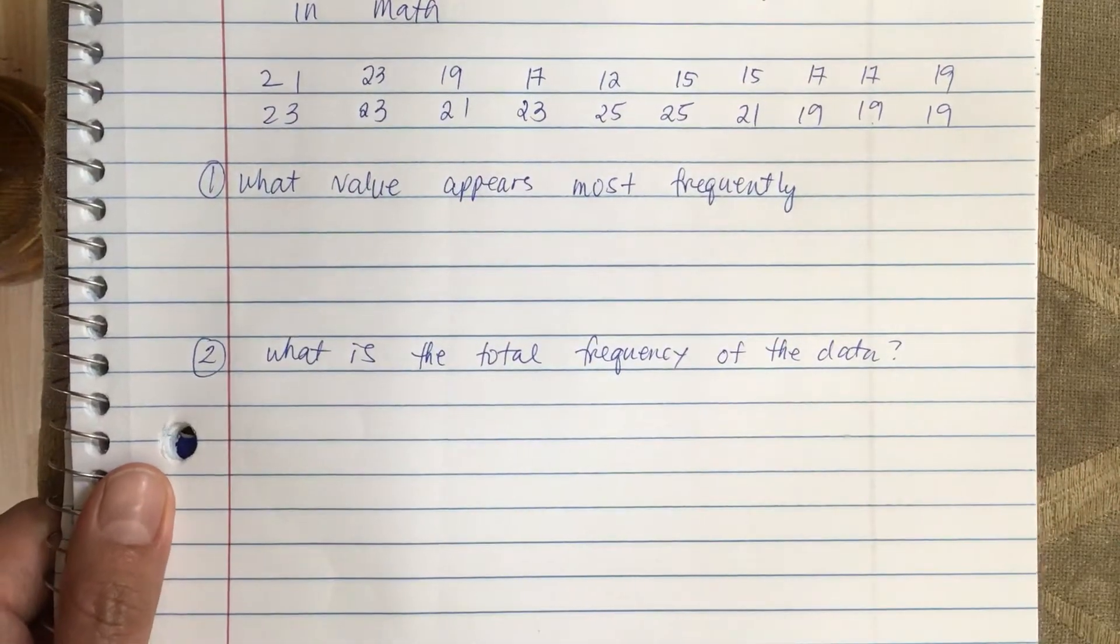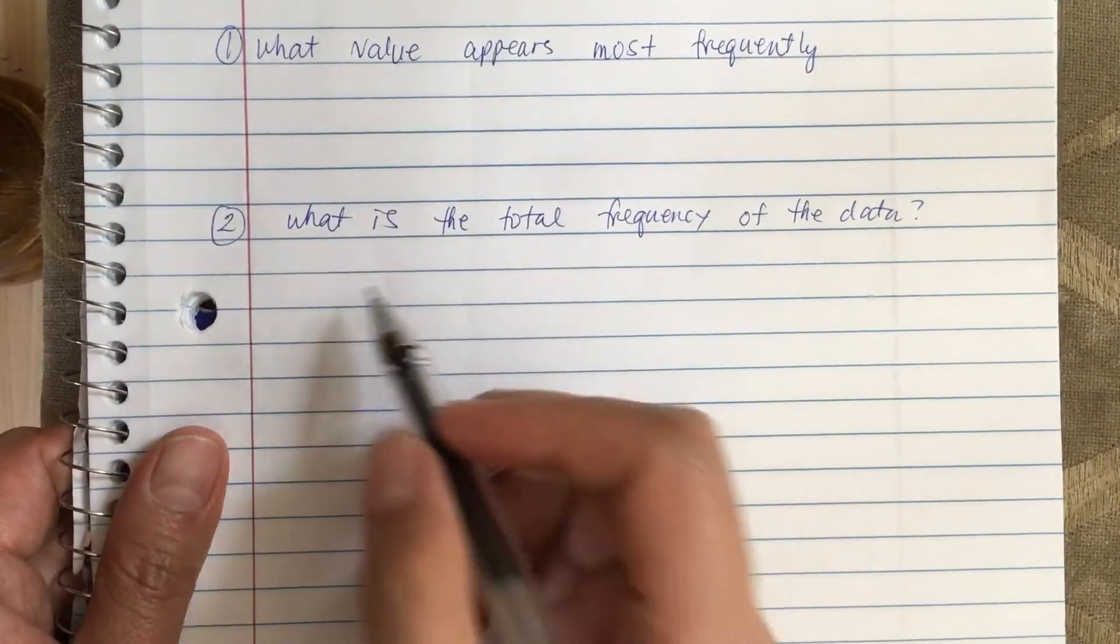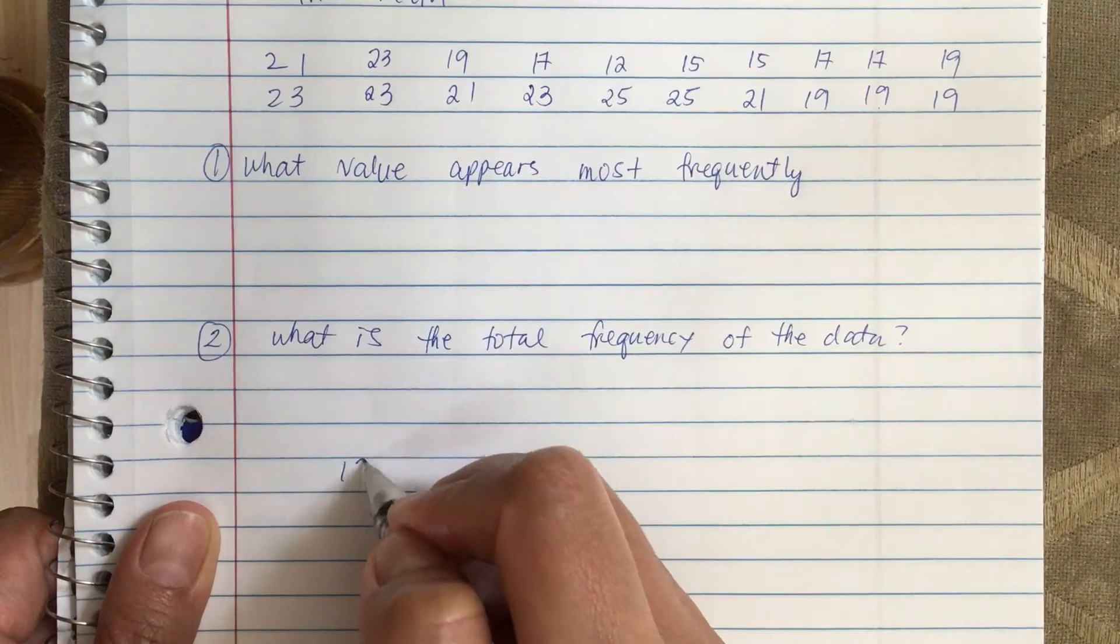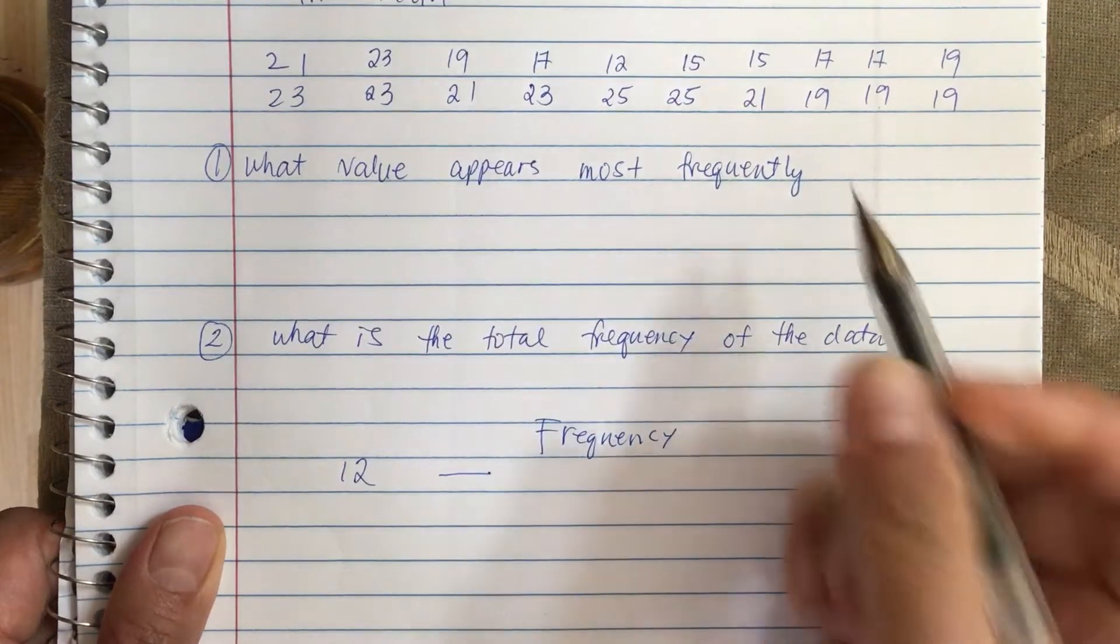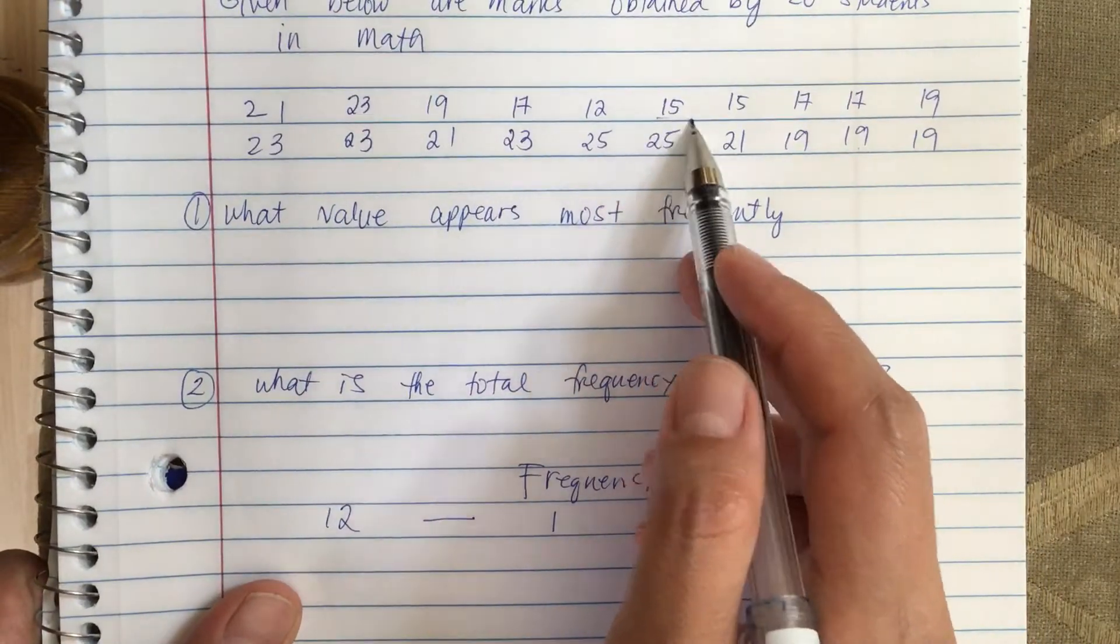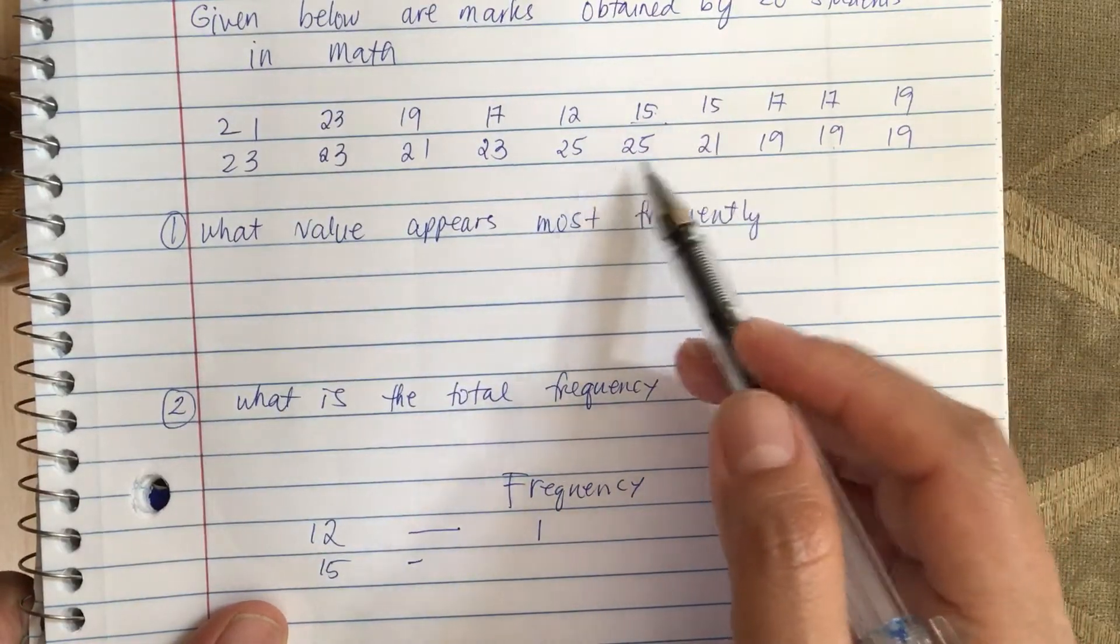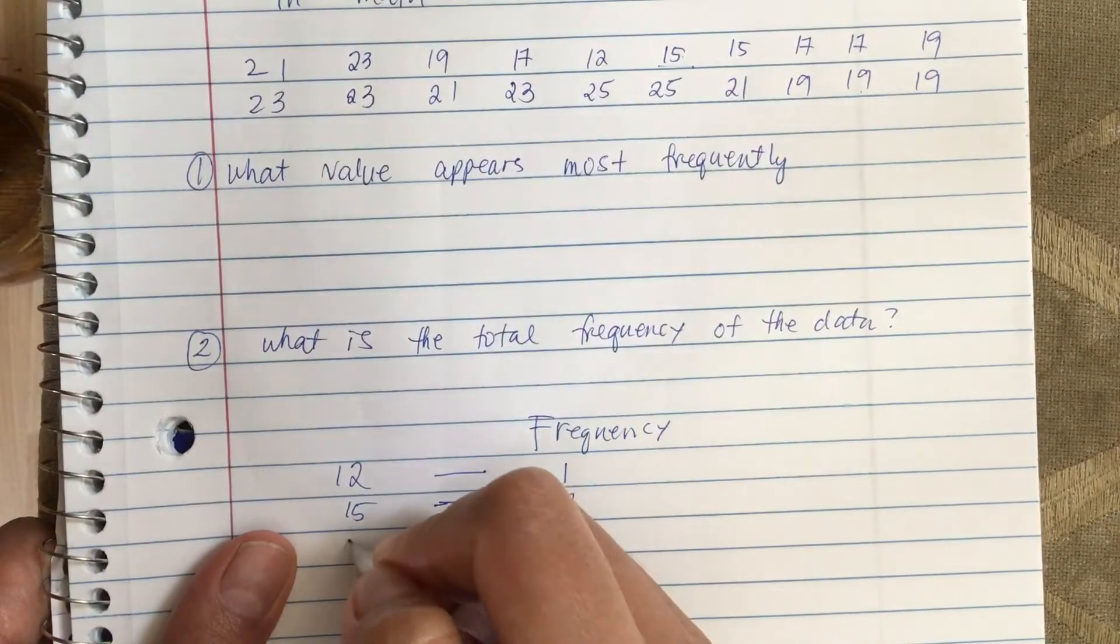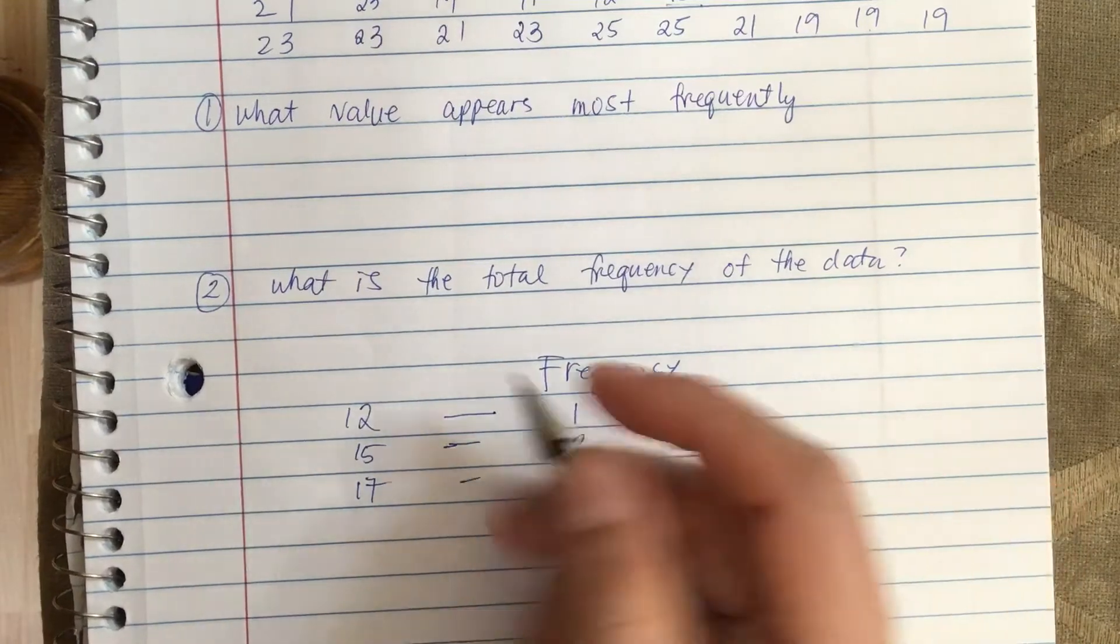Let's do it here on the bottom. So the lowest is 12. Now the frequency - there's only one, so we put in one. Now the next one is 15, and there are two of them, so we put in two. Next one is 17, and there are one, two, three 17s.